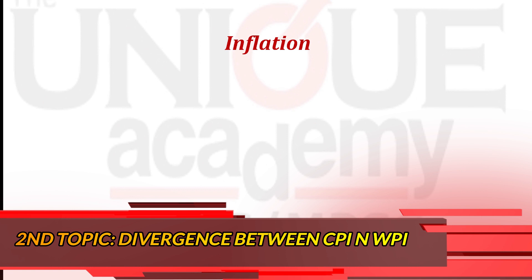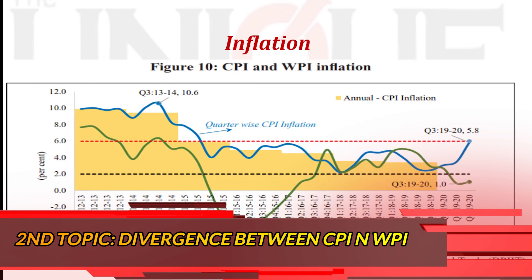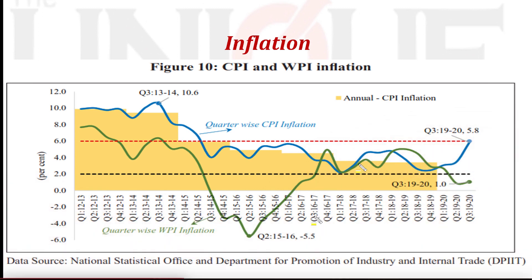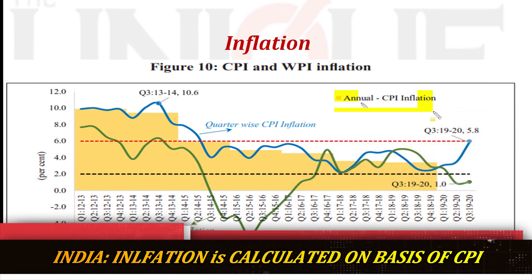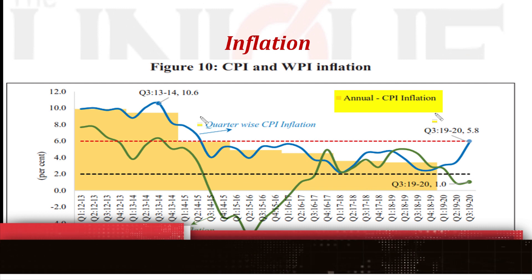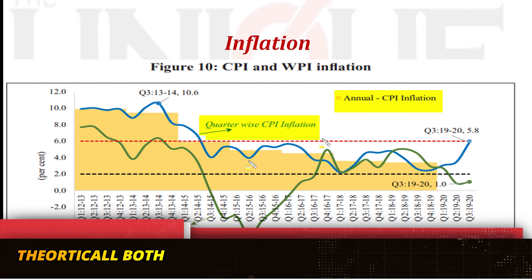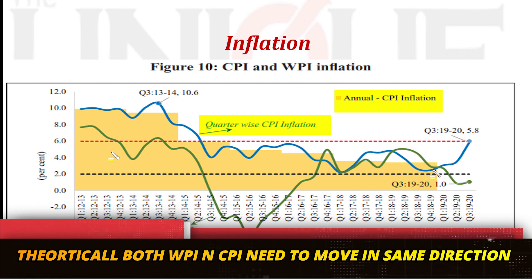Now let's discuss economic data from the economic survey pertaining to inflation. In India, inflation is calculated via the CPI — Consumer Price Index. If we look at the diagram, the blue line indicates CPI inflation while the green line represents WPI inflation. Theoretically there should be convergence between WPI and CPI, but this year that is not the case.